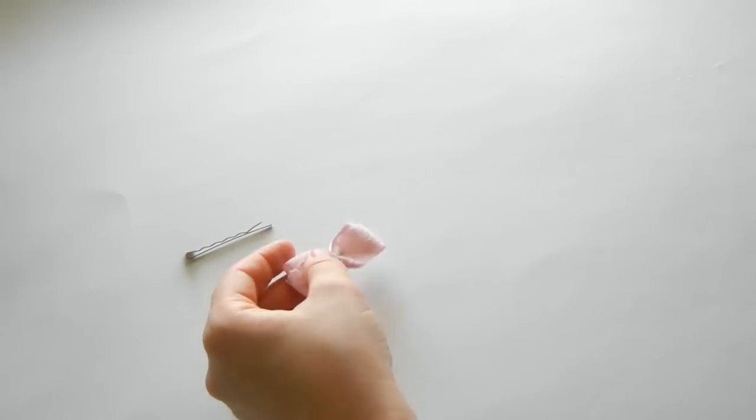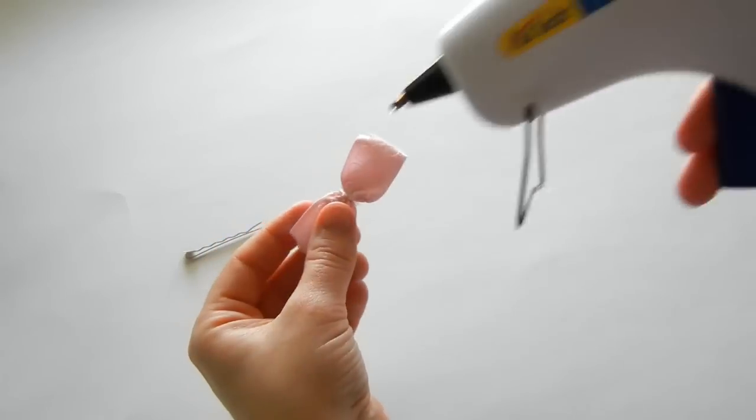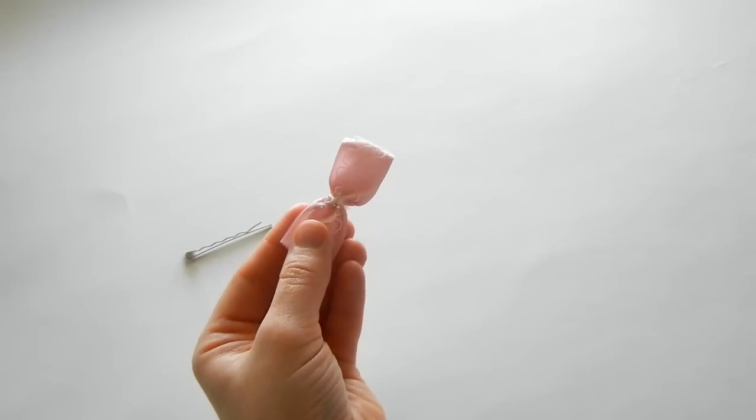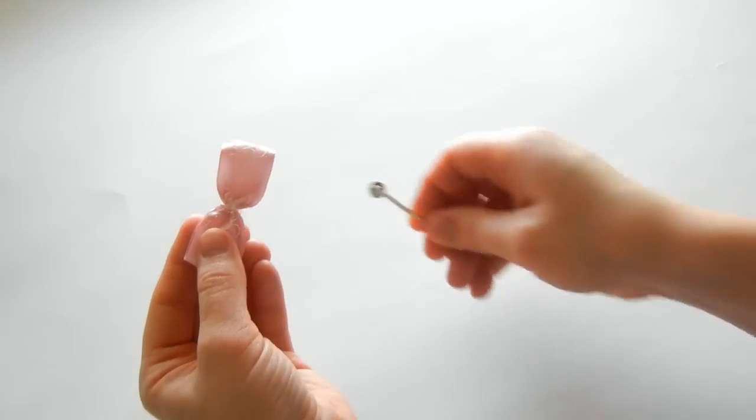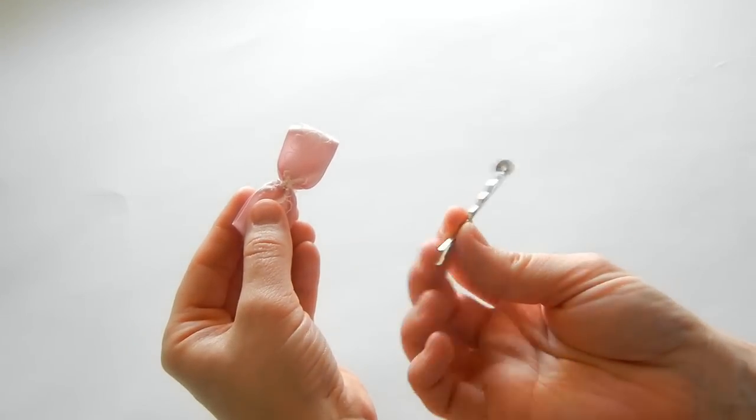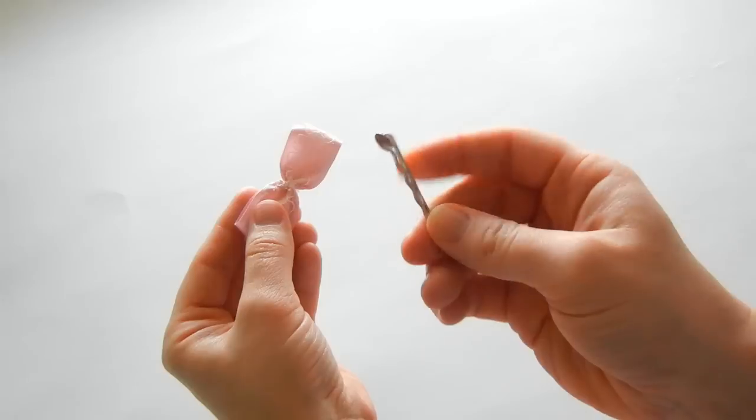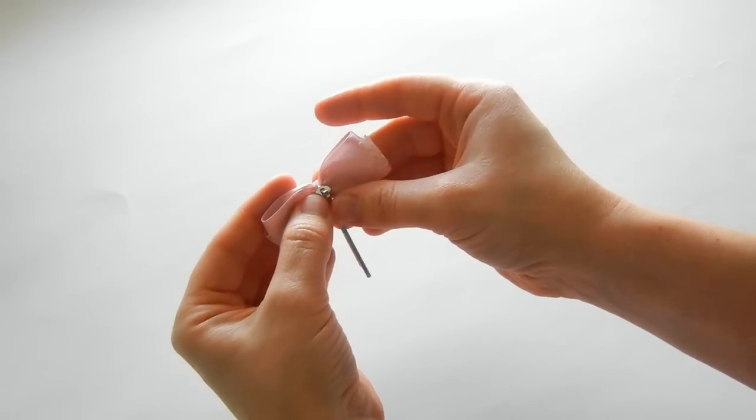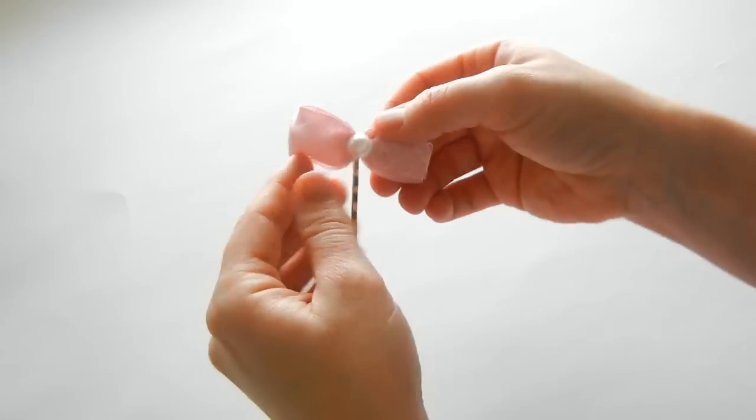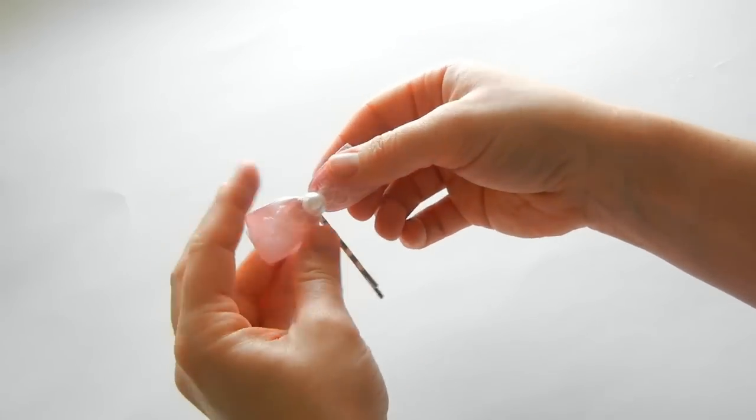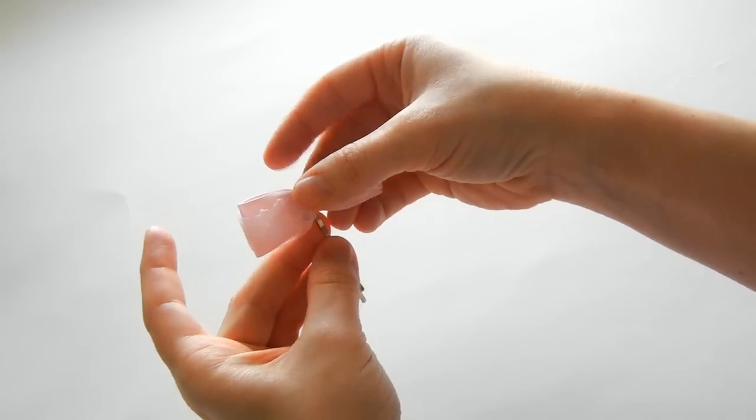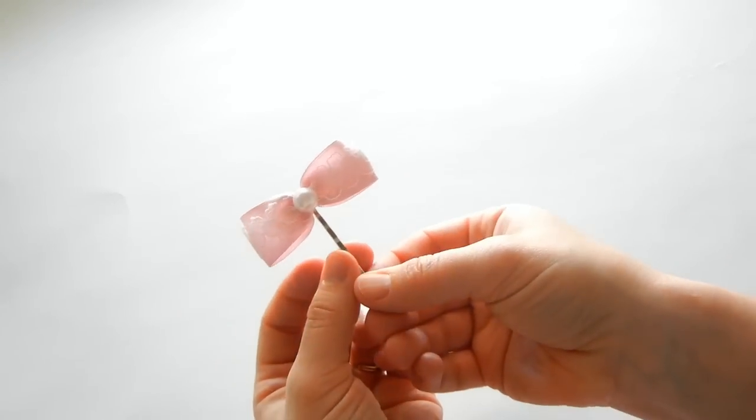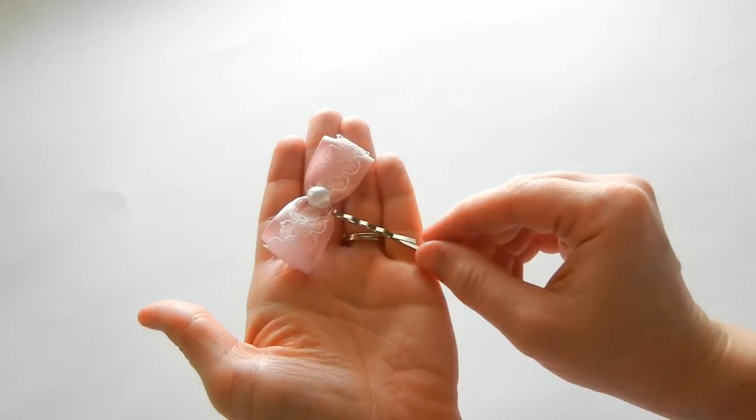Place hot glue in the center of the back of the bow. Take the barrette with the flat side and place it on the back of the bow. Bring it around and make sure it's even. Once it's cool, it's ready to go, and you have a super cute bow tie bow.